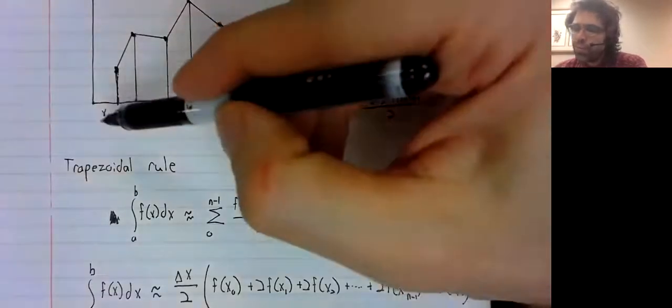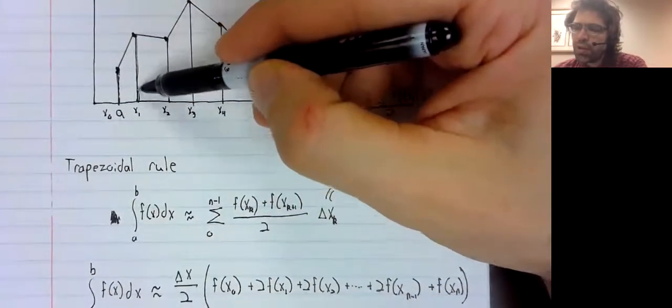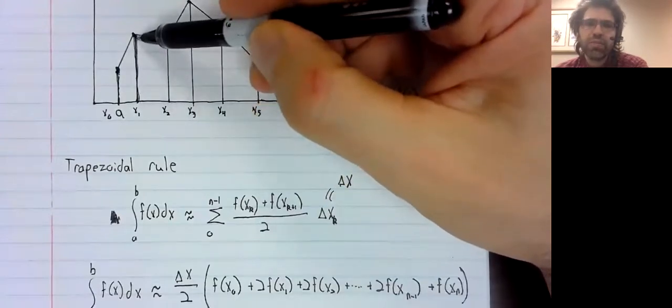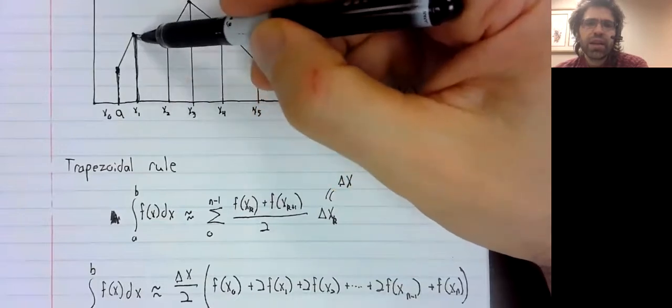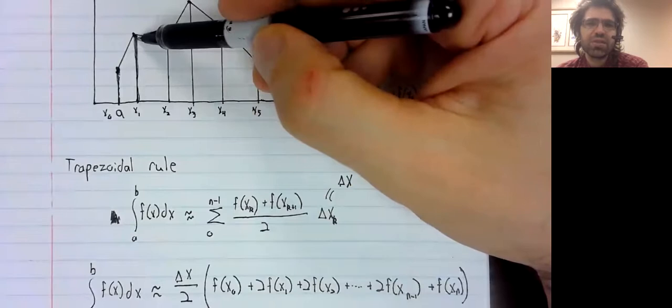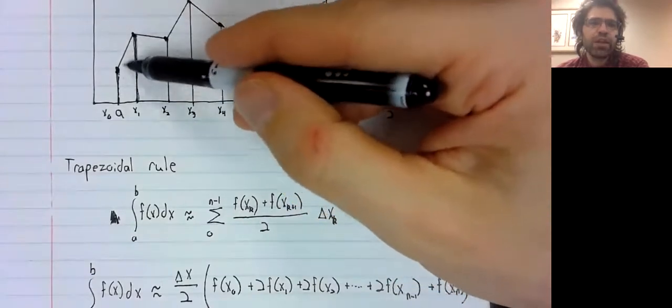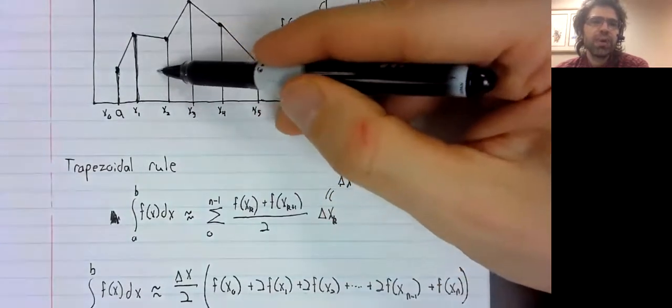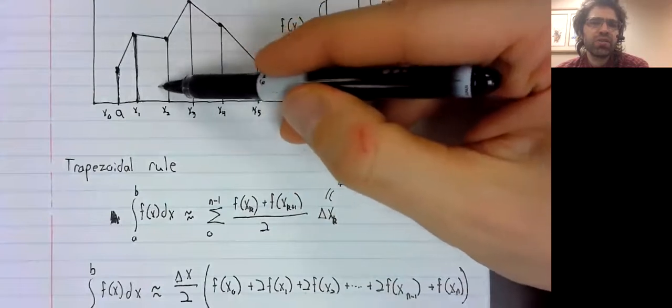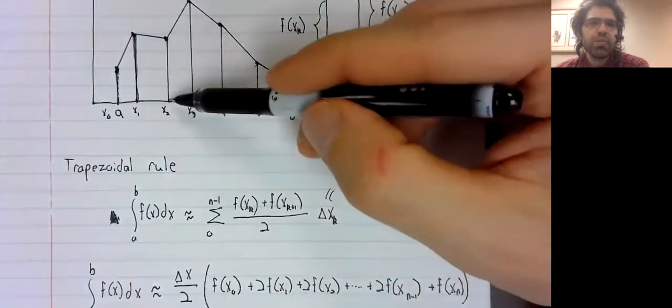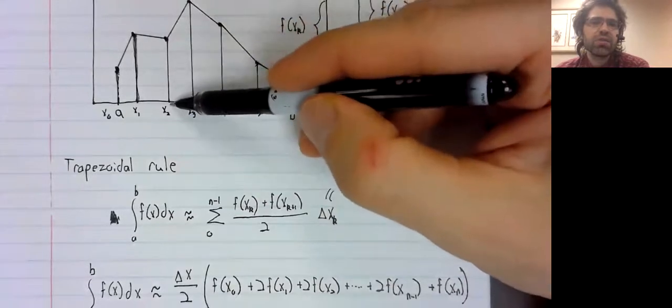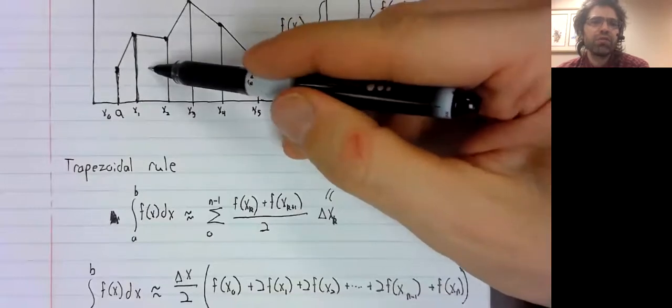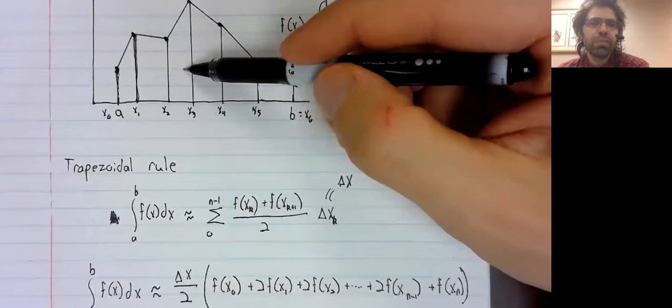Well, f of x sub one is the length of this line segment. And the length of this line segment appears twice. It appears when we find the area of this trapezoid and it appears when we find the area of this trapezoid. Likewise, this side here appears when we find the area of this trapezoid and this trapezoid.